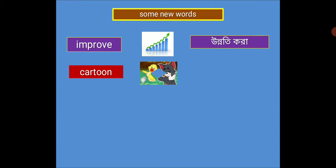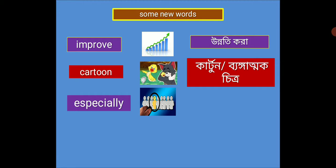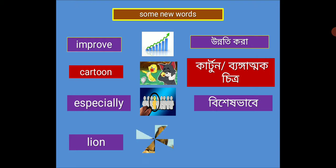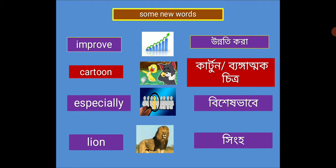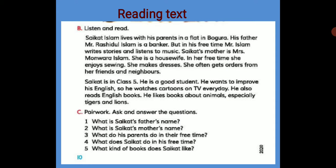Everyone open your books. We are looking at the cartoon pictures — especially a lion. Now let's look at the meanings, then move on to the reading text. Activity B has a text that we will read together, insha Allah.